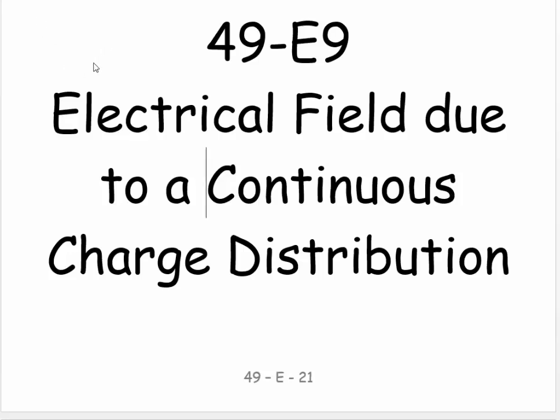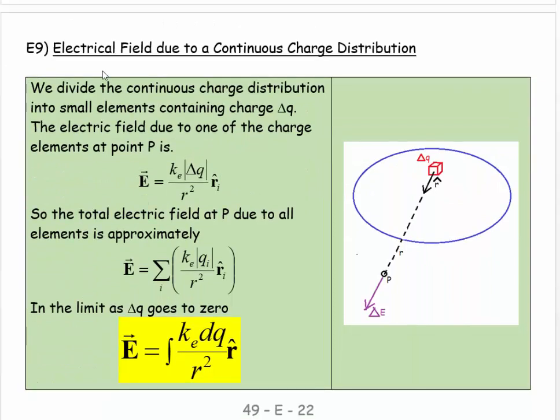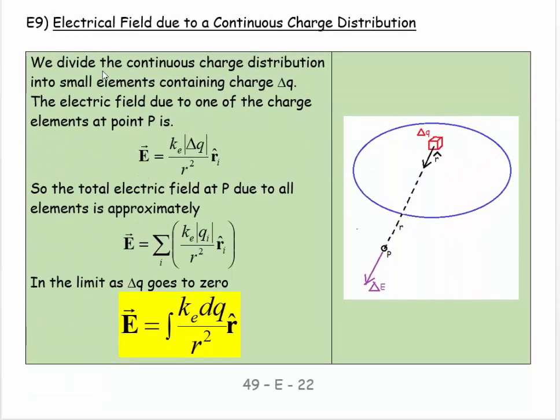Welcome. This is 49E9, and this is an electrical field due to a continuous charge distribution. What we're picturing is a cloud of charge. There's so many little charges in here that it's a distribution. Each little cube of this distribution has a certain little bit of charge inside it.